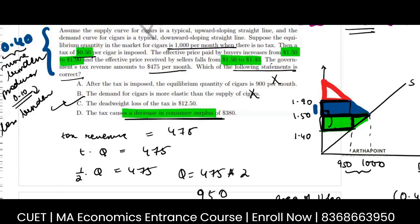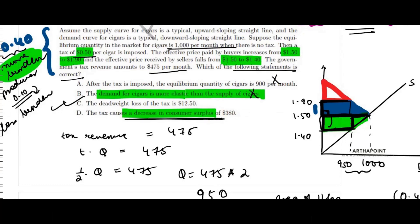So whichever party bears more burden of the tax is less elastic. Which bears more burden - less elastic. Less burden - more elastic. So now just see here, it is saying that the consumer is bearing more burden of the tax, so consumer demand should be less elastic. But the question is saying demand is more elastic, so this is incorrect. It will always move in the opposite direction.